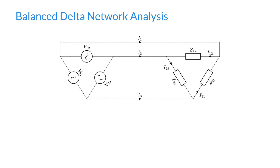Here we've made a little change to the notation. We're calling them V1,2, V2,3, and V3,1. We're saying that V1,2 is the voltage between line 1 and line 2. So if we have our three lines — line 1, line 2, and line 3 — V1,2 is the voltage applied between line 1 and line 2.